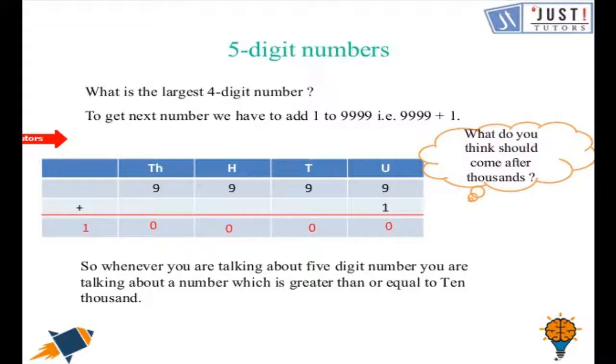So can you tell me how many digits are there in 10,000? As you can see there are 5 digits. And do you know what column is this called? The column which is before thousands. It is called 10,000 and it is written as TH.